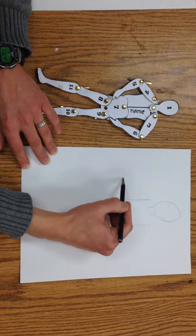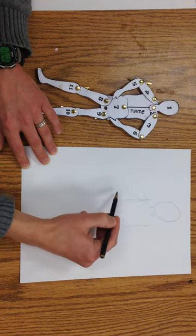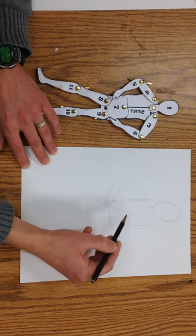And then for the arms we're going to make an oval, another oval. I'm just going to go ahead and draw the little mitten on there.